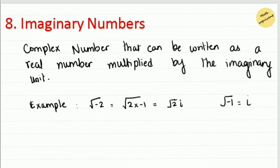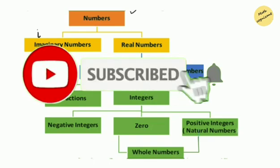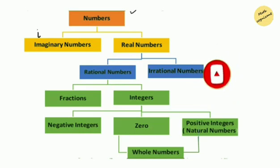Whenever you have the square root of a negative number, you can separate it into a real number and a negative factor, then replace √(-1) with the imaginary unit i to solve the expression easily. To learn more about the number system, please watch part 3 of this series. Hope you understood this concept — please like, subscribe, and press the bell button to get notified of our latest videos.